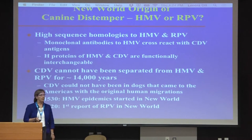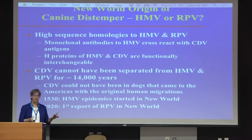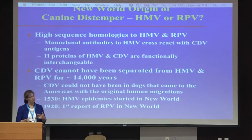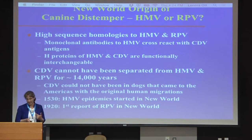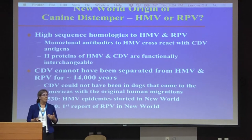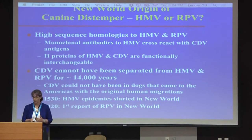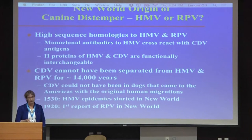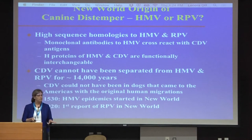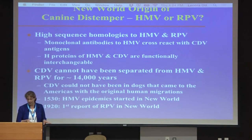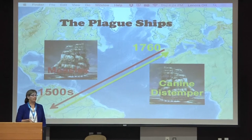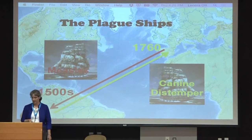So if there's a New World origin for canine distemper, is the ancestor human measles virus or rinderpest? They're very closely related viruses with very high sequence homology, and monoclonal antibodies cross-react. It's extremely unlikely canine distemper came over with dogs when humans migrated into the New World — having those viruses separated for 14,000 years and still being so similar is not plausible. Human measles virus hit the New World in 1530; rinderpest didn't arrive until 1920. So measles came from Europe, and canine distemper went back the other way around 1760.